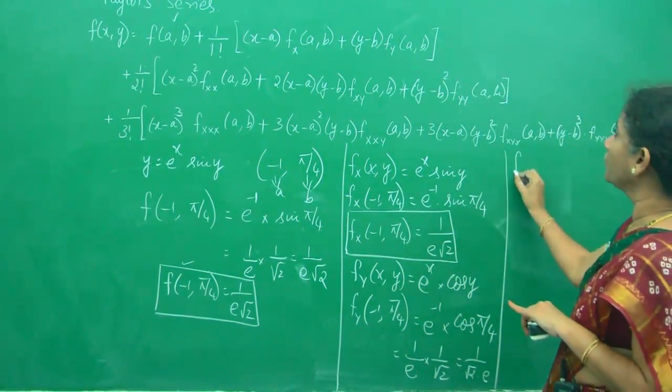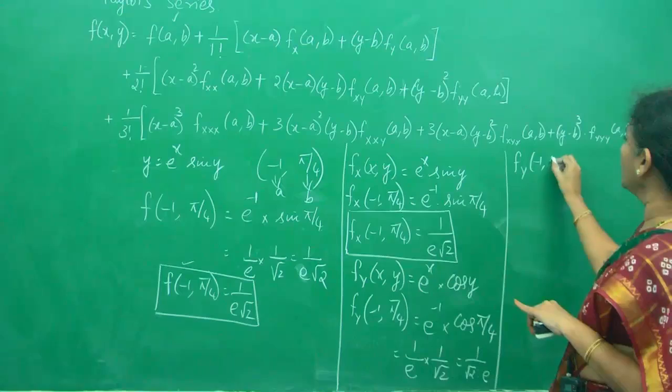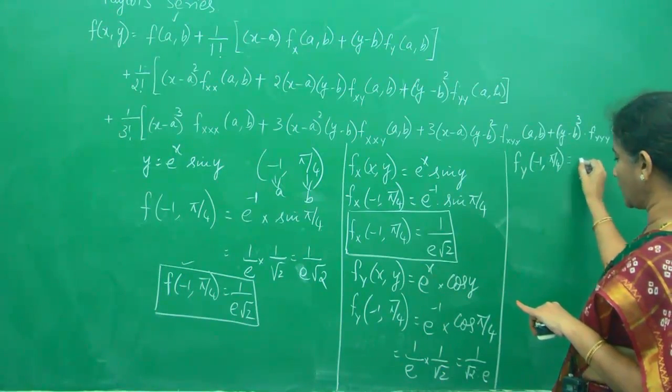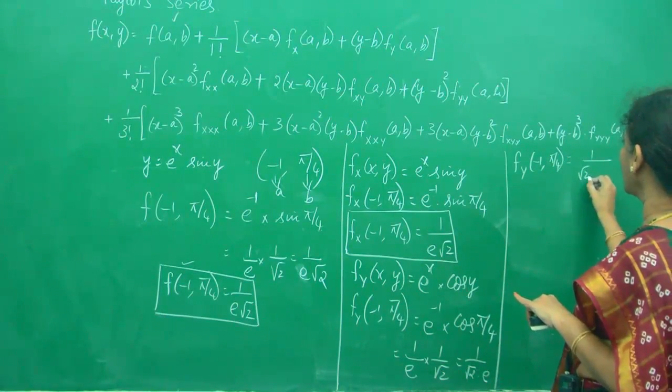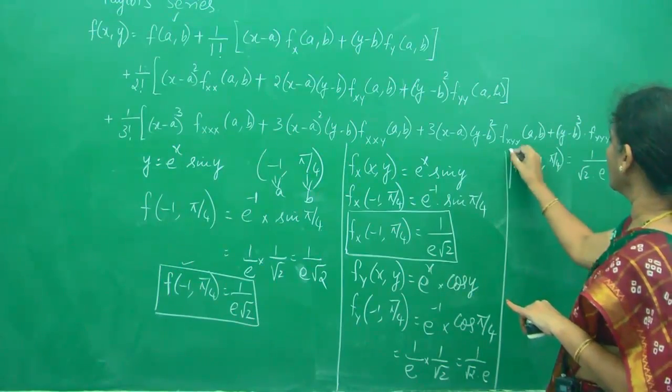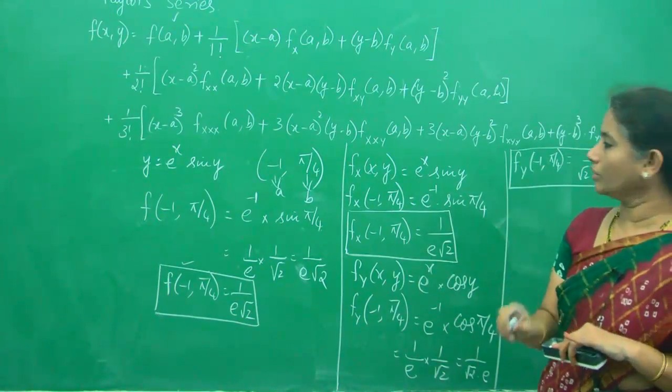Let me write it in the rectangle. f_y(-1, π/4) is 1/(√2 · e).